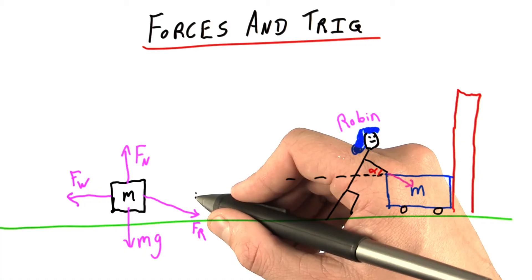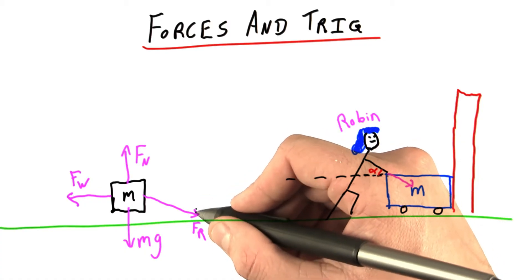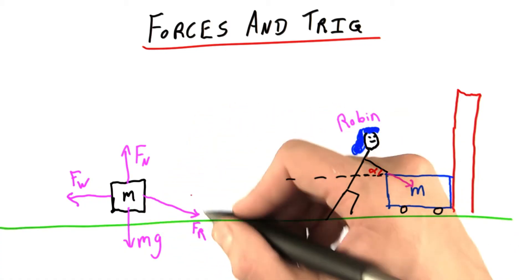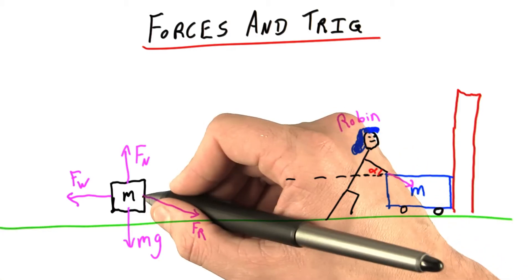Wait a second, though. I know how to handle this. This is just me breaking down a vector into its components. Let's make a right triangle, where this will be the hypotenuse.